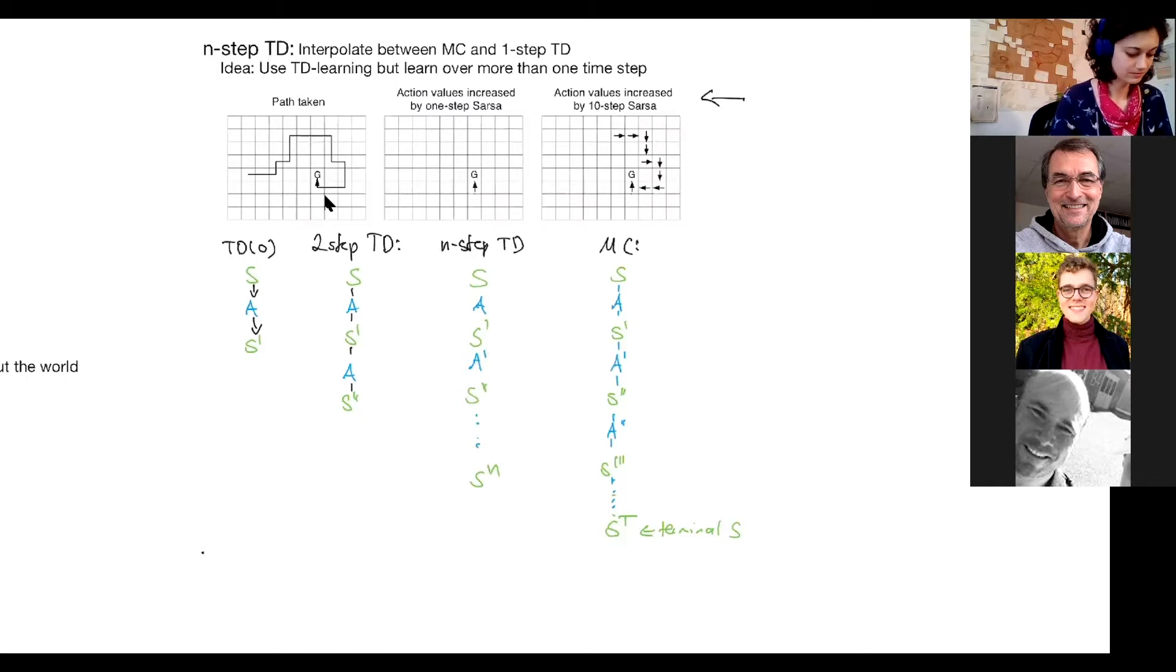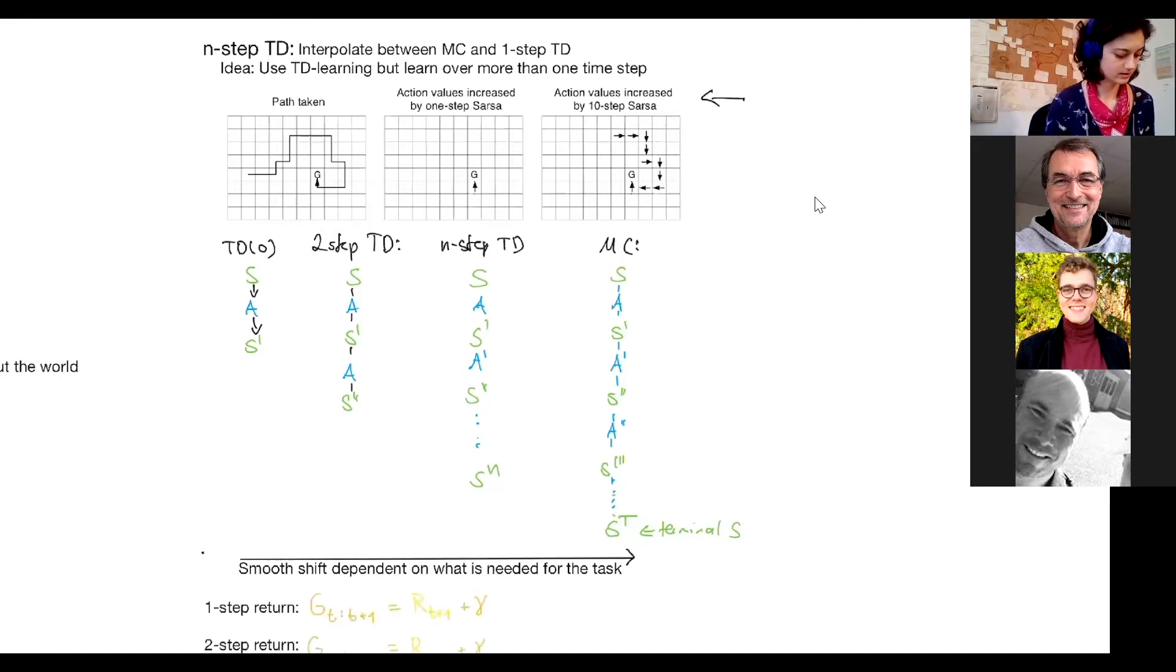So we use the next n steps to update our value estimate. This is then a mix between TD and Monte Carlo. But it's still a TD method, because it updates earlier estimates based on how they differ from later update estimates. So it still uses a TD error. And we can smoothly shift between what is needed for the task.